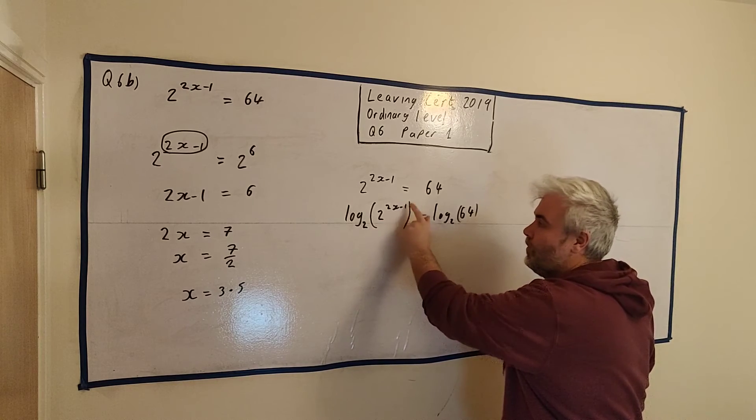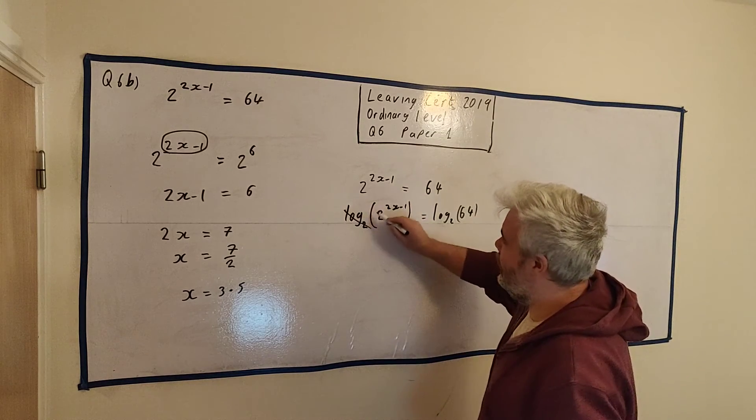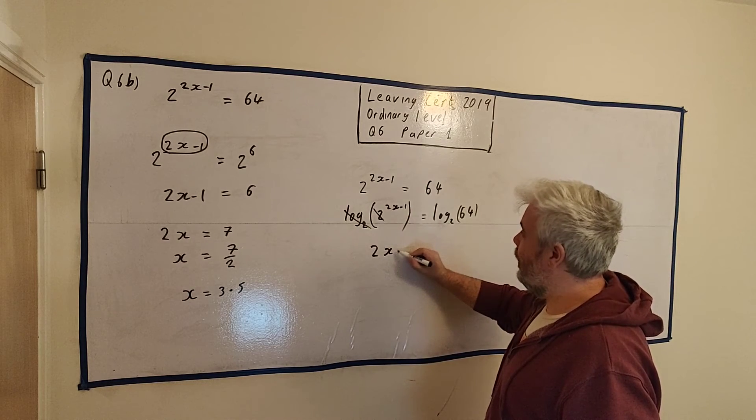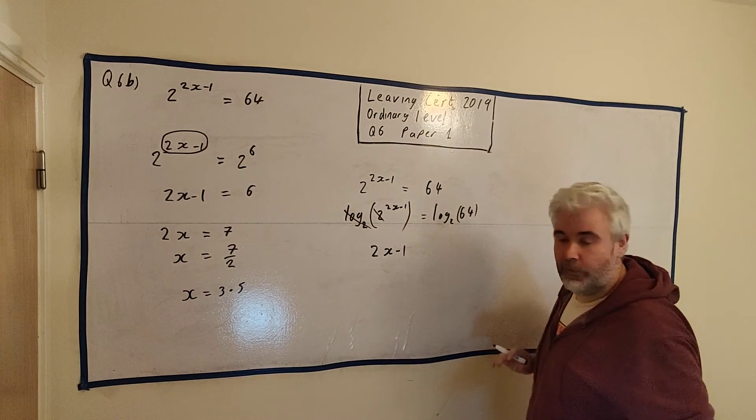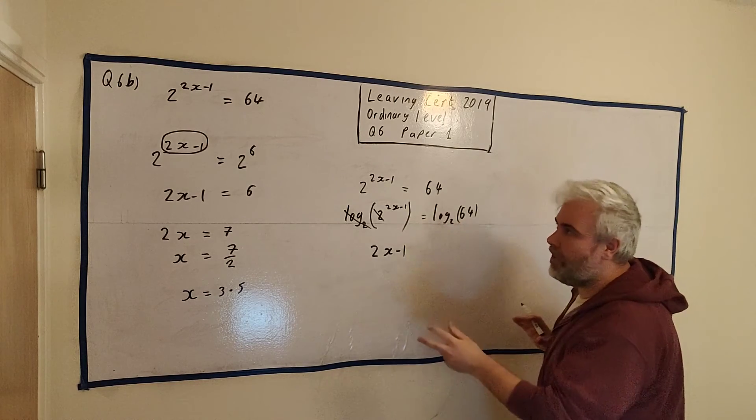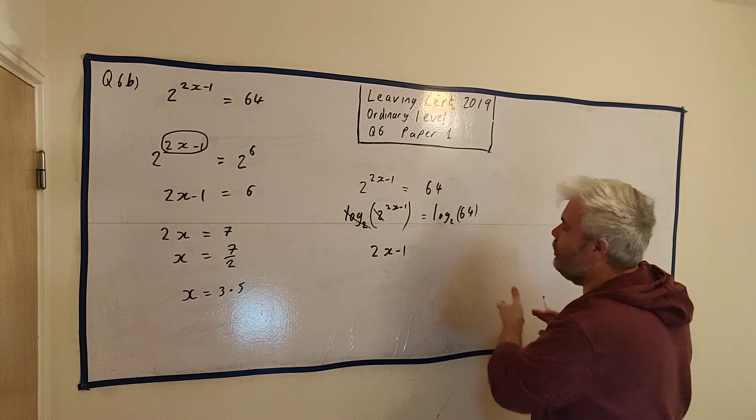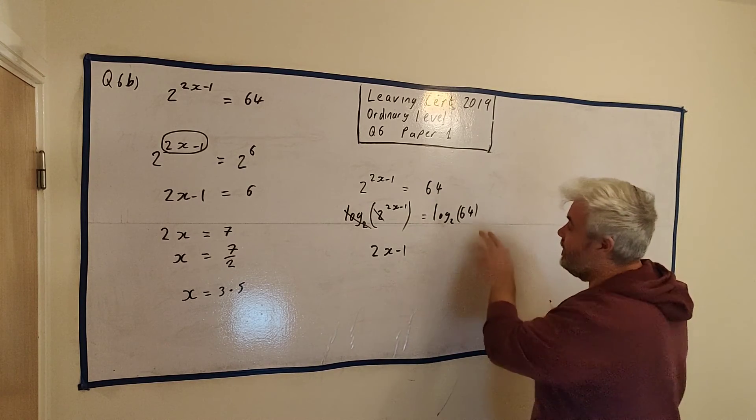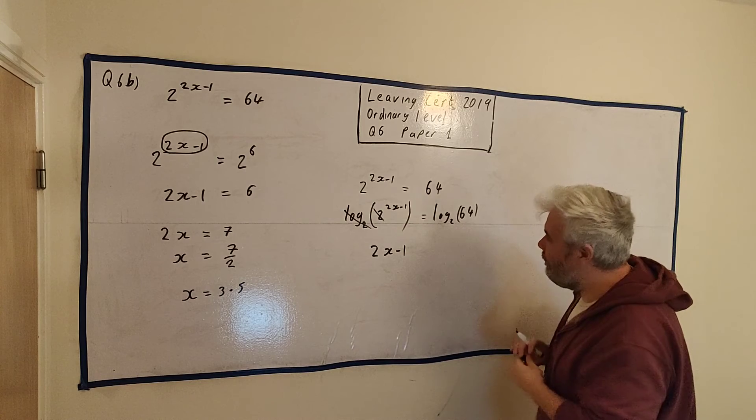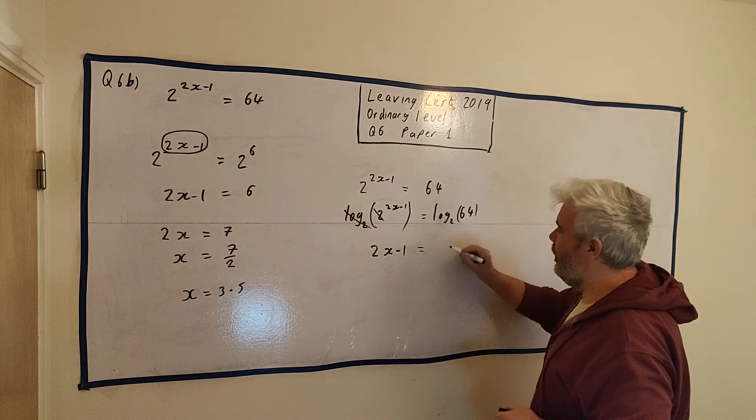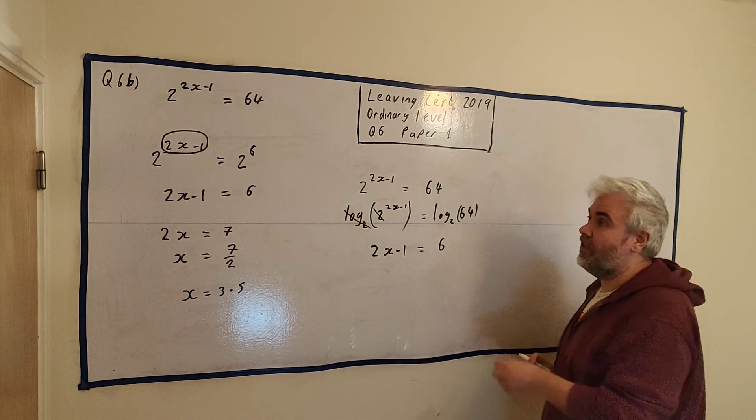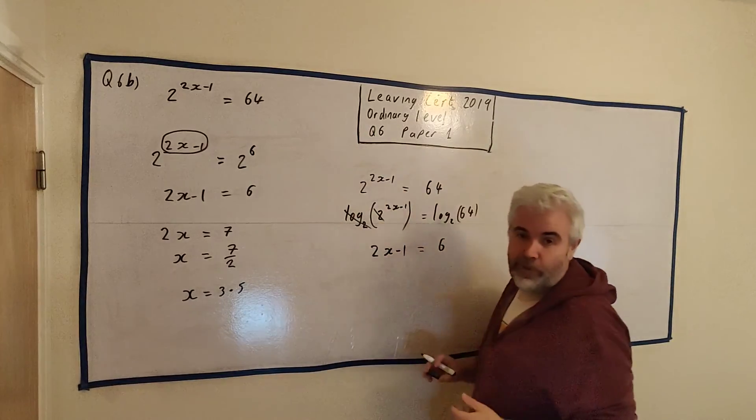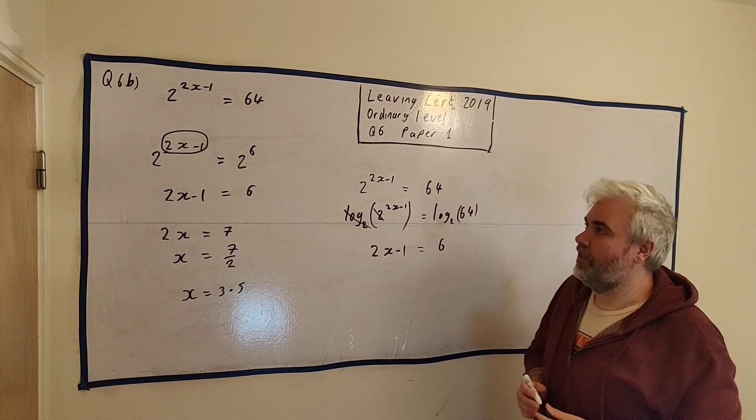Now, log to the base 2 and 2 to the power of, they cancel each other. That's what the opposite of 2 to the power is. And we're left with 2x - 1. And a calculator will do this one. A log is asking a question. It's saying 2 to the power of what is equal to 64. But we have calculators. We can type this into a calculator. It will give out the answer 6. But that's the answer we already knew. Once we get here, it's the same as previously. So that is another way to solve this question.